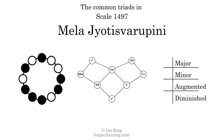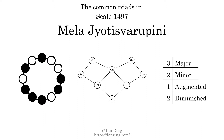Here are the common triads present in this scale. The diagram in the center is a graph of parsimonious voice leading between triads. There are 3 major triads, 2 minor triads, 1 augmented triad, and 2 diminished triads.